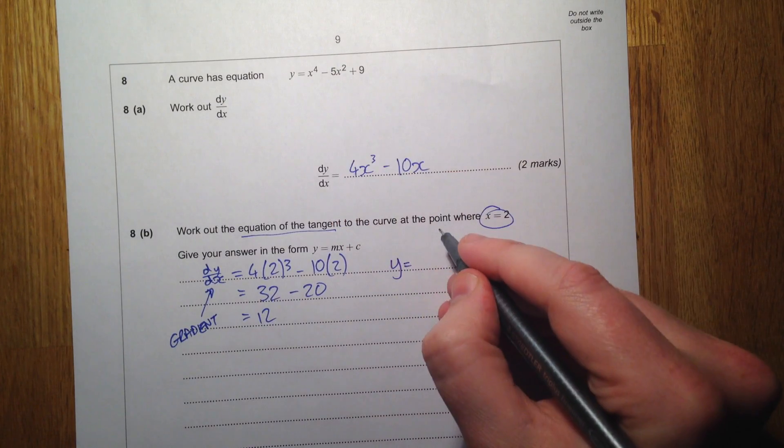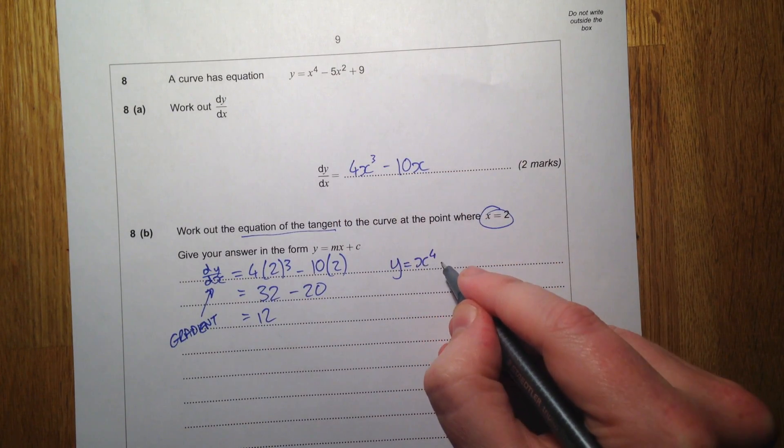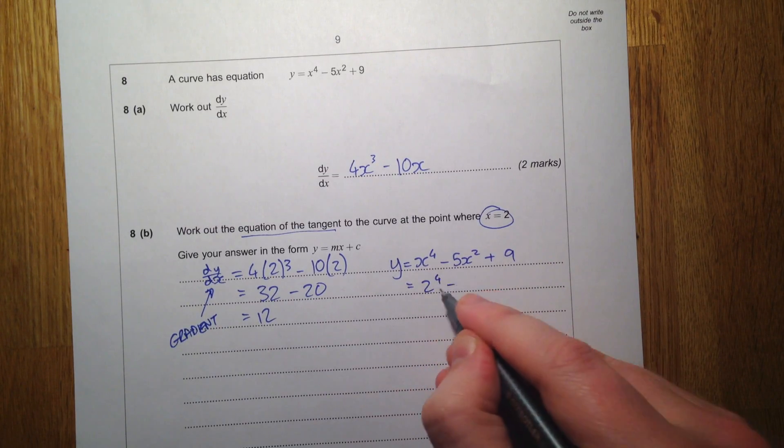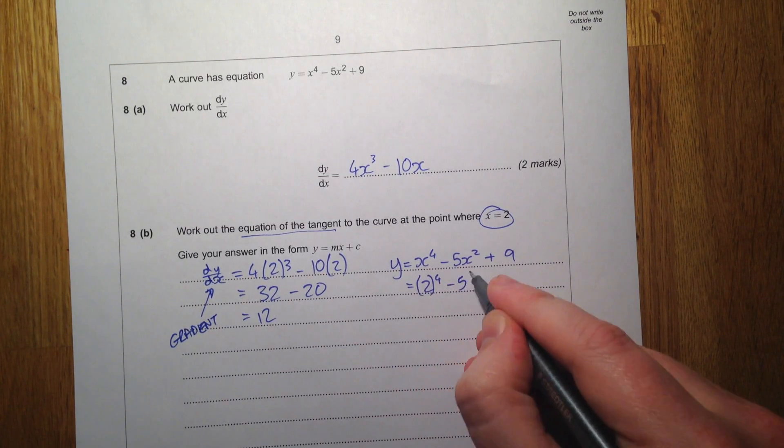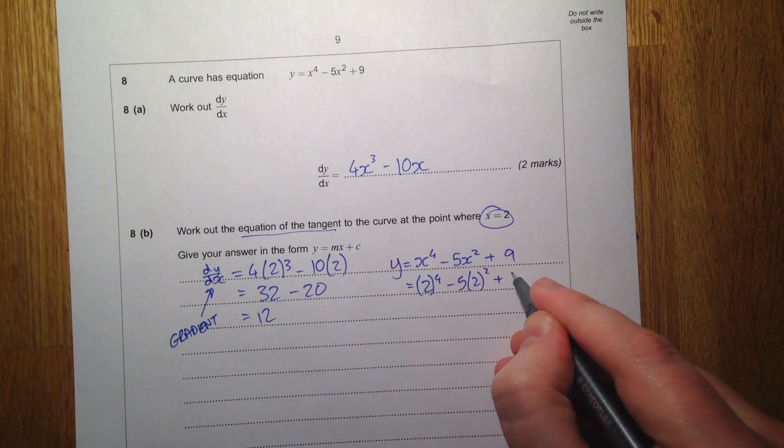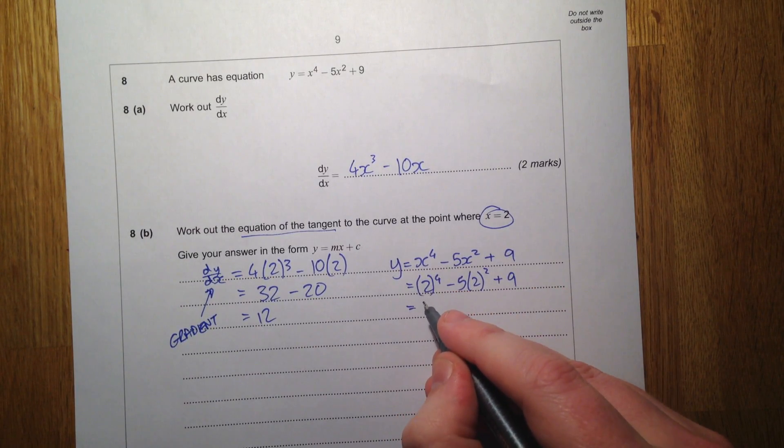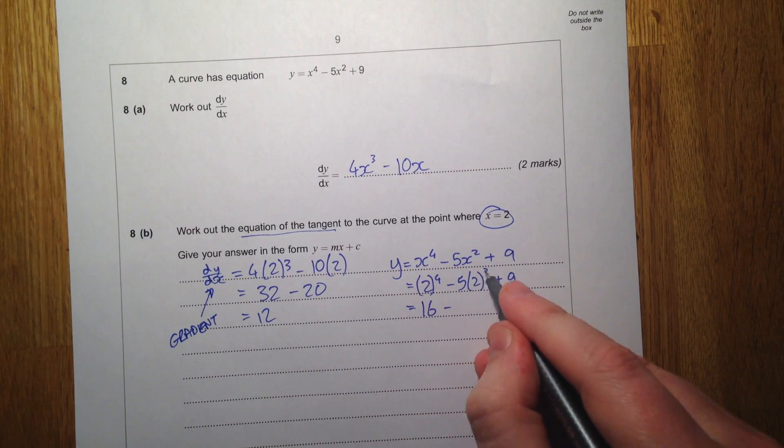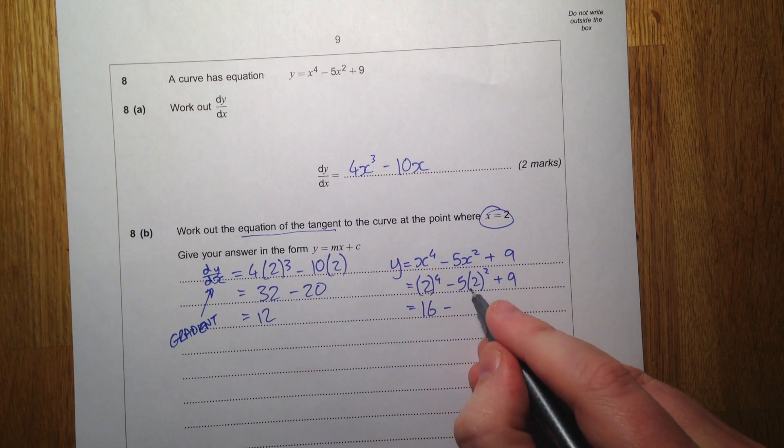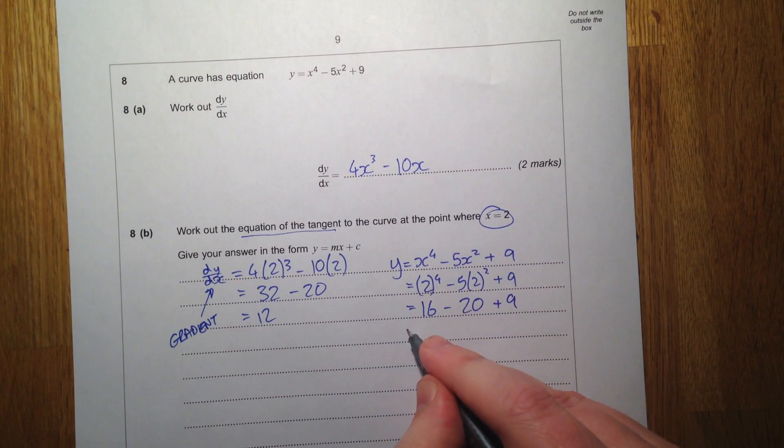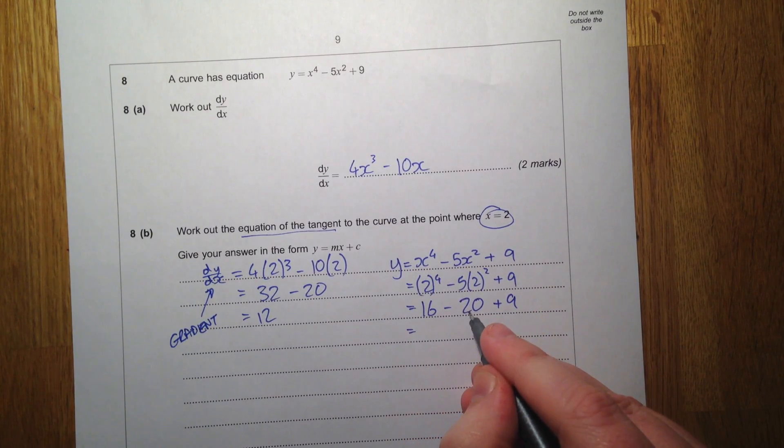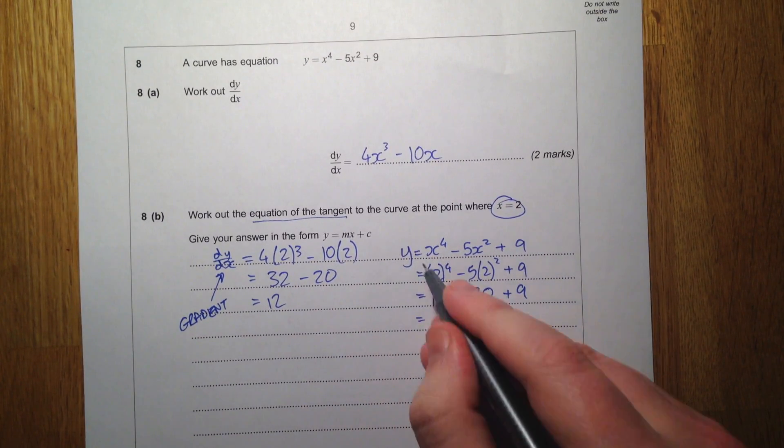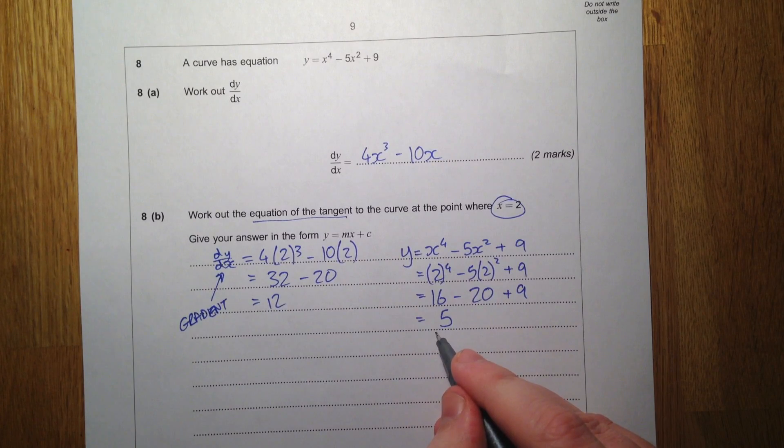Let's look at the other function. y equals x⁴ - 5x² + 9. So we want 2 to the power of 4, take away 5 lots of 2 squared plus 9. 2 to the power of 4: 2 times 2 is 4, times 2 is 8, times 2 is 16. 5 lots of 2 squared is 5 lots of 4, that's 20 plus 9. So we have a value for y.